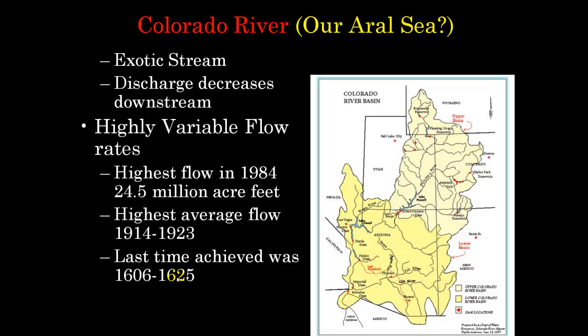The last time the Colorado achieved that high average flow was around 1600 to 1625, based on sediment records. What's going on right now is flows well below that average, and what was considered a drought in the southwest is now more or less looking like the new reality for the region.